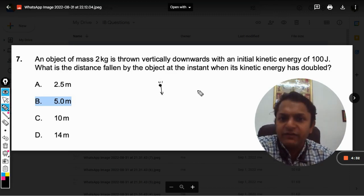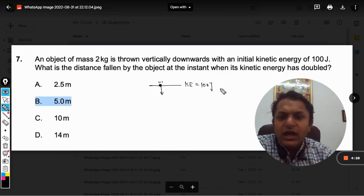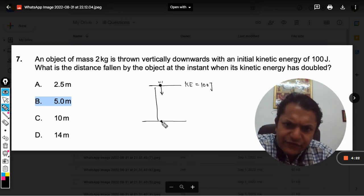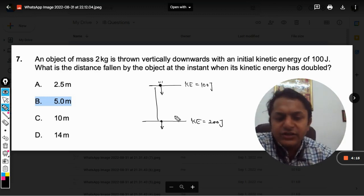The initial kinetic energy is given to be 100 joule, and now after it has fallen a certain distance, it is found that the final kinetic energy is now double the earlier kinetic energy.